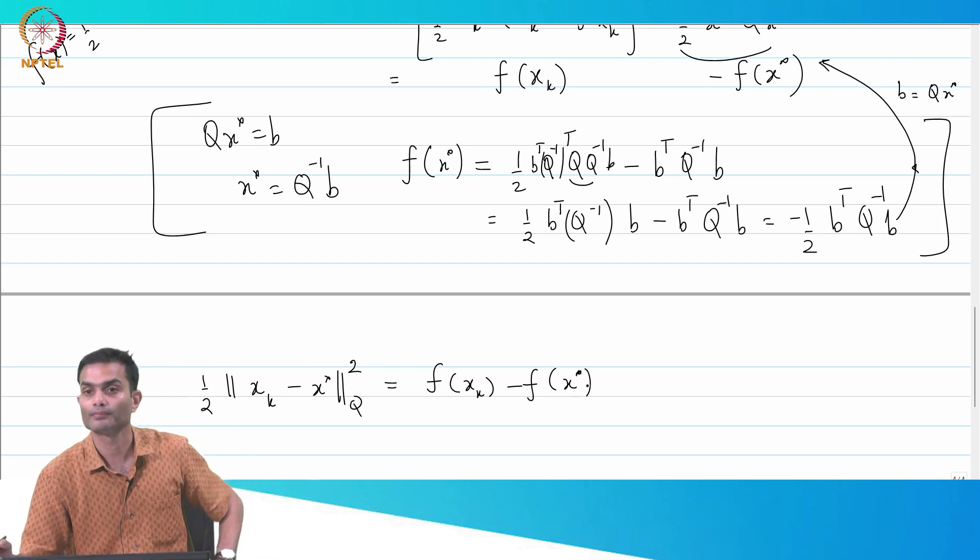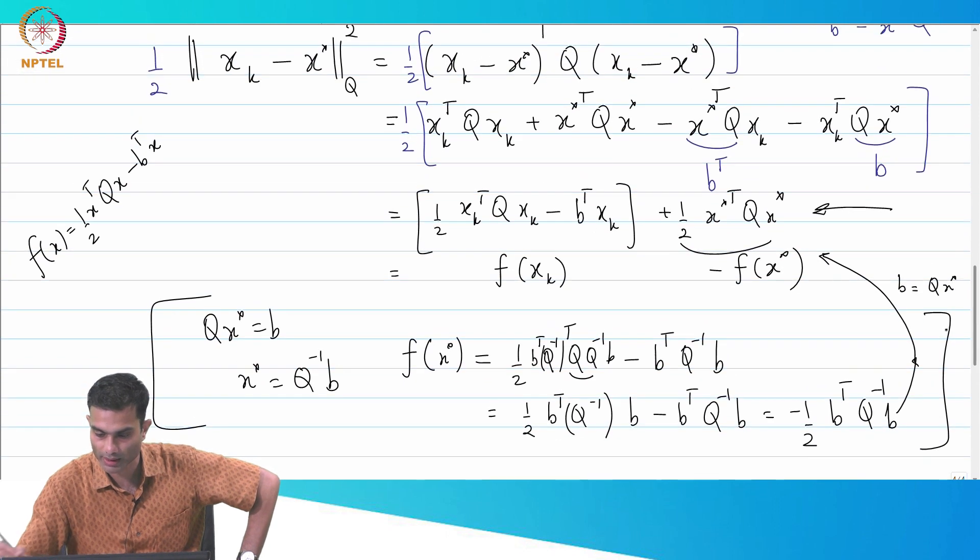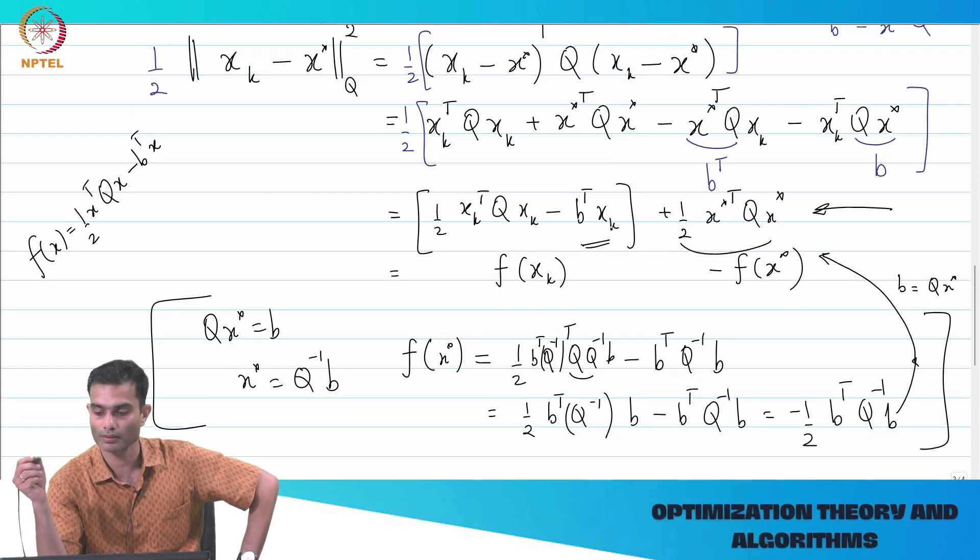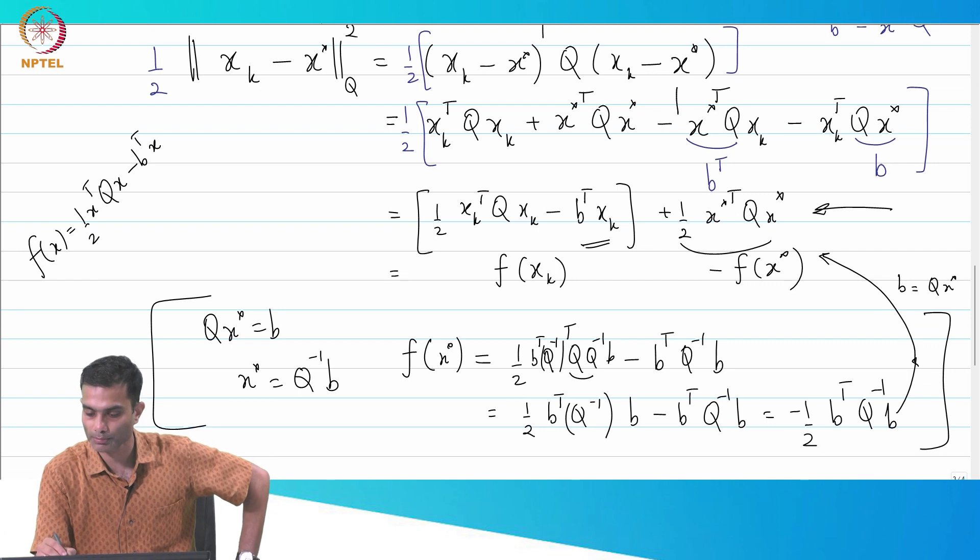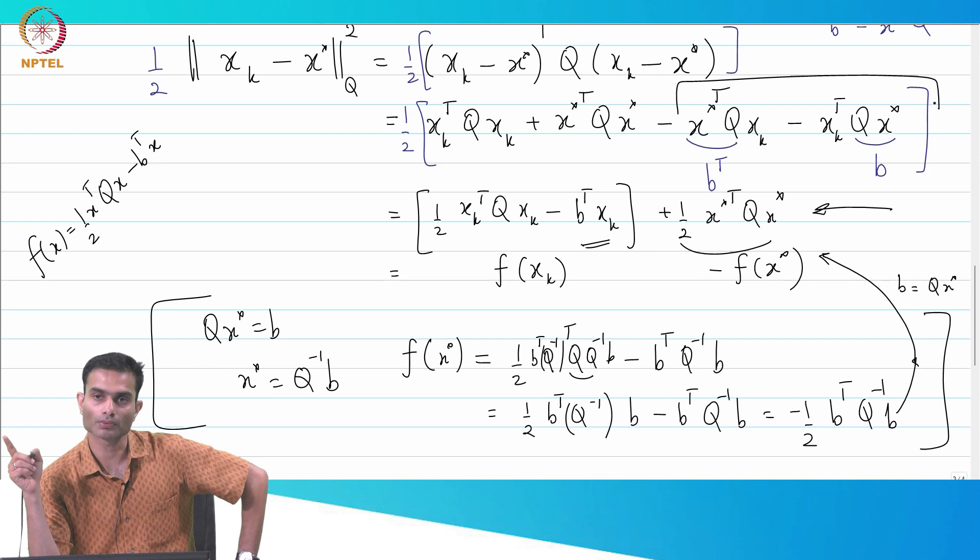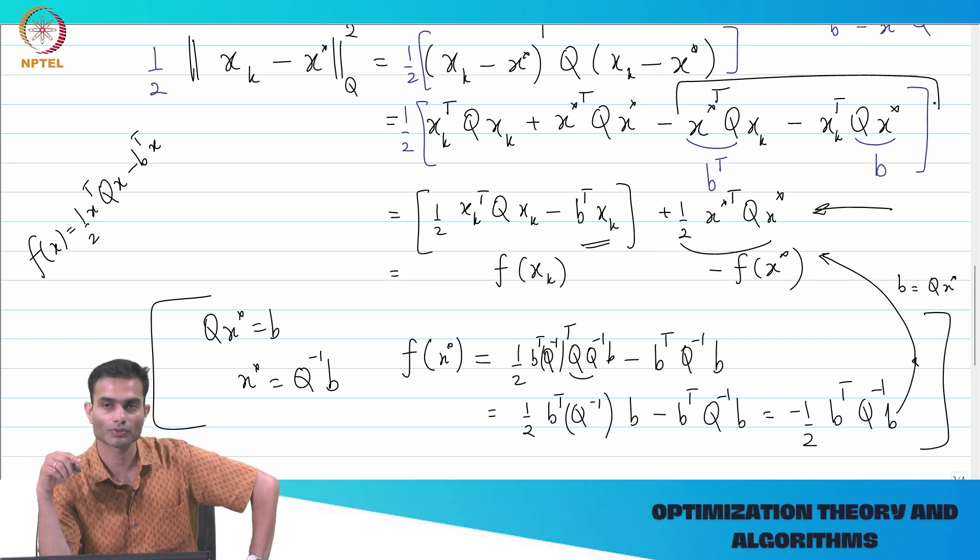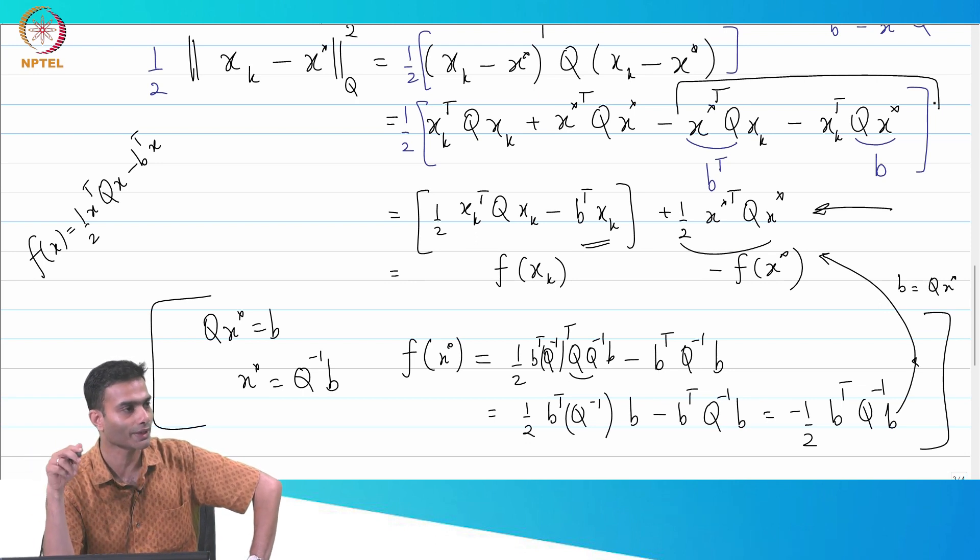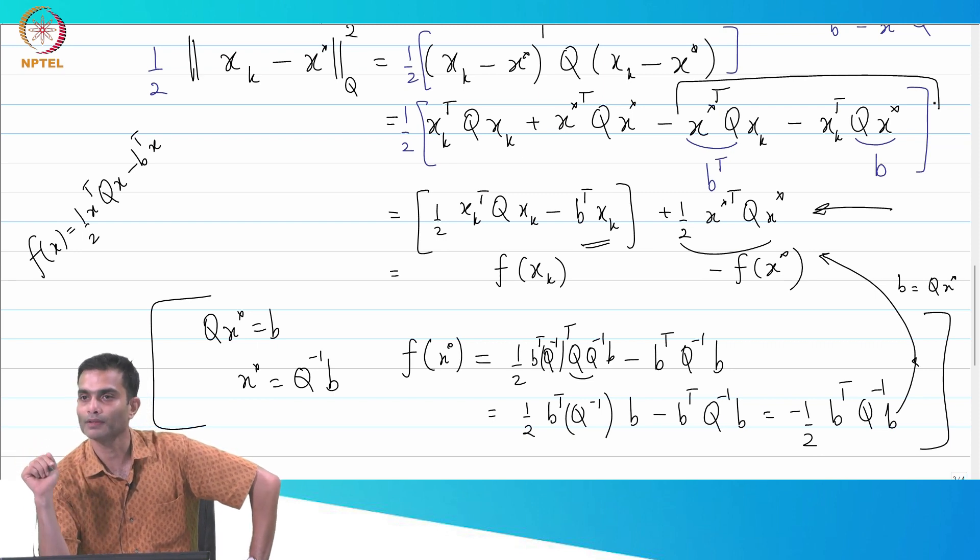Let us write this as an aside. So, what did I, let us summarize it over here. Half of this distance, x_k minus x star square in the Q norm is equal to f of x_k minus f of x star. The b x_k, that is here. It had, there were two of them, then they got multiplied by half. So, the coefficient became 1. The term number 3 and term number 4, these guys.